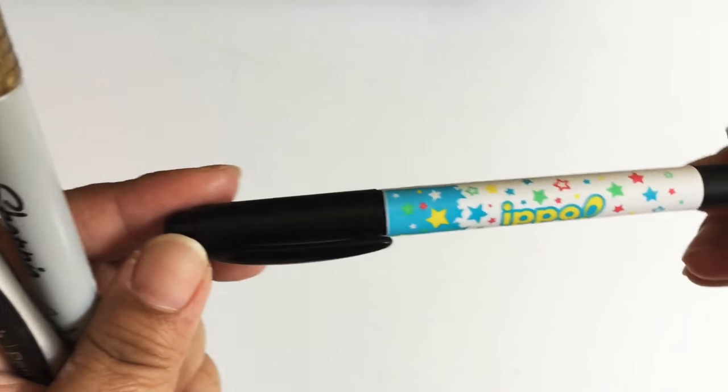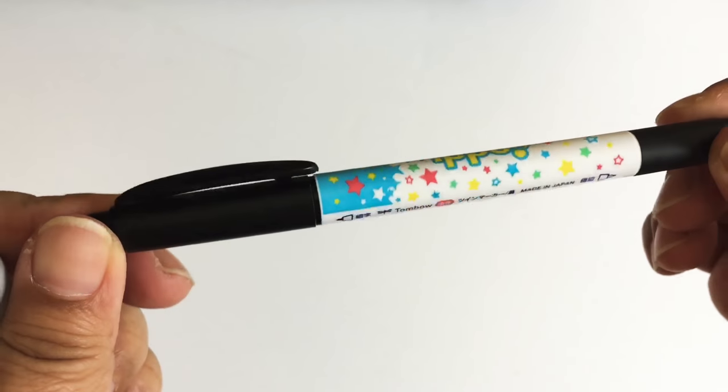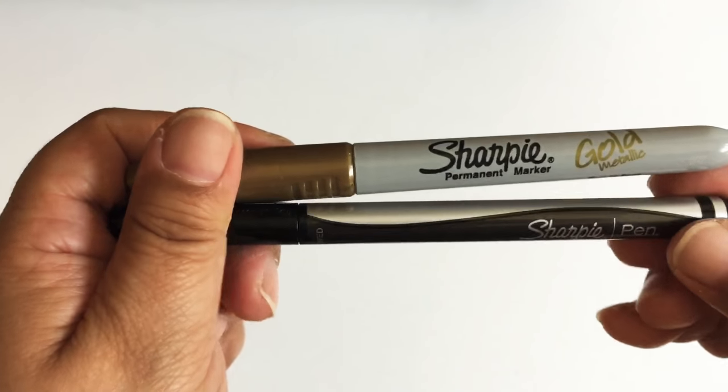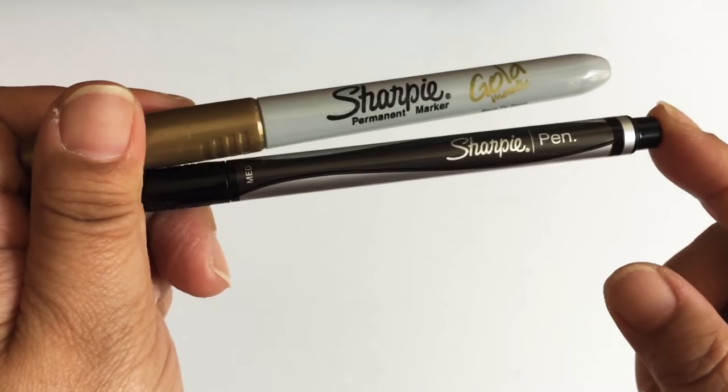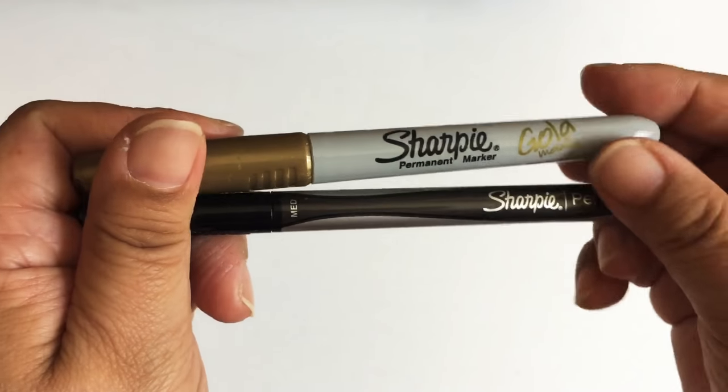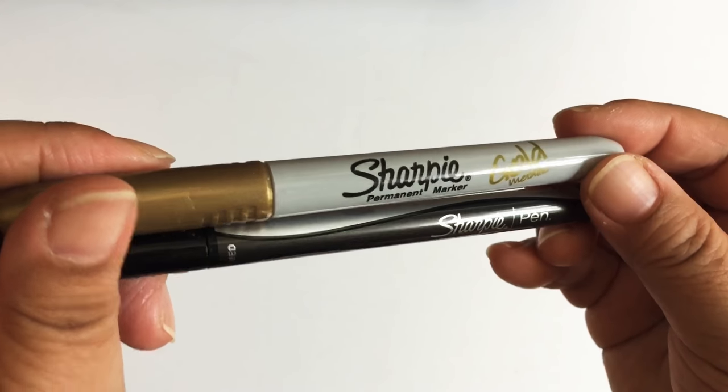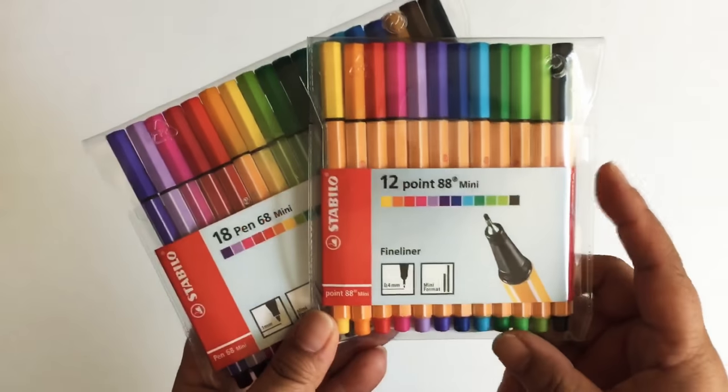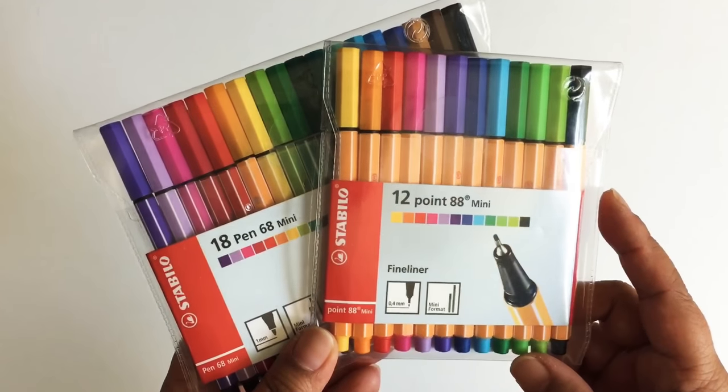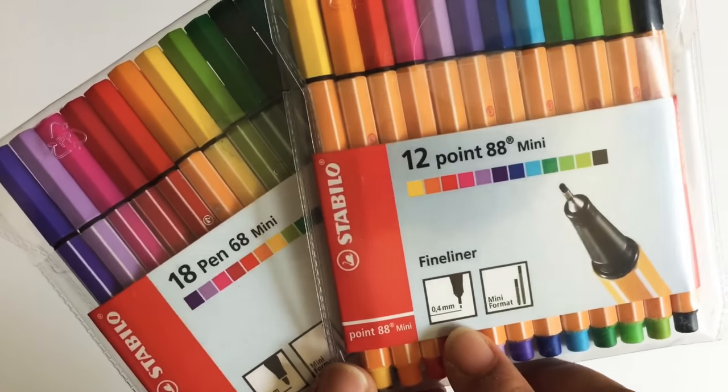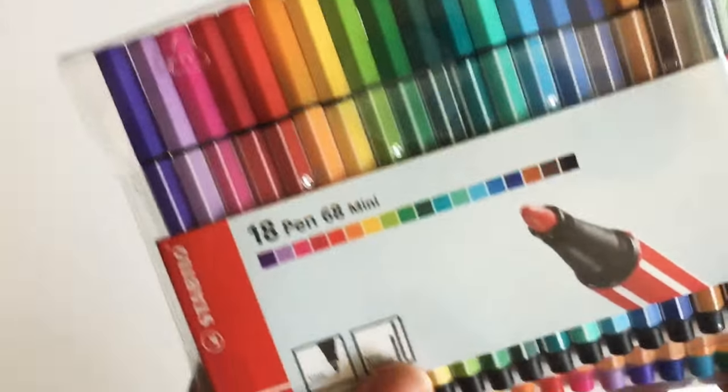To write on washi tape you can use this Ippo pen by Tombow. I have a couple of different Sharpies, so this is just the medium point Sharpie pen in black, and this is the Sharpie permanent marker in gold metallic. For a bit of color I have some markers. These are Stabilo mini markers in 0.4 millimeters as well as one millimeter.